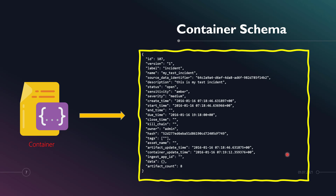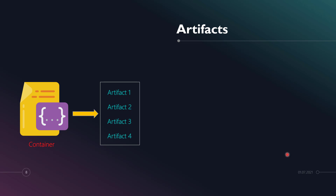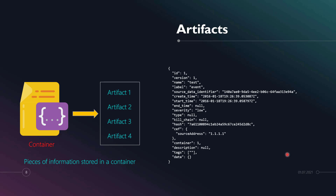Going back to the container schema, another important detail is the artifact count, which leads us to the concept of artifacts. A container can have many artifacts. An artifact can be thought of as a piece of information stored in a container — similar to an extracted field in Splunk Enterprise.